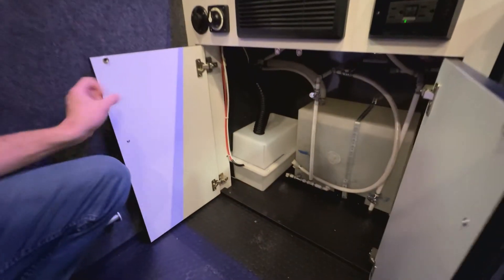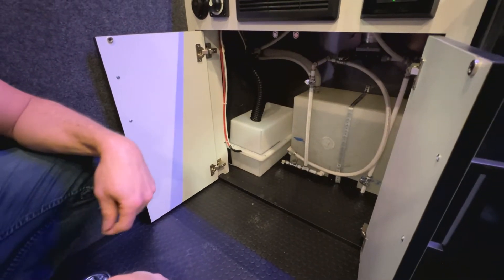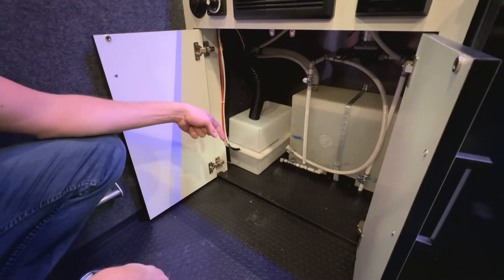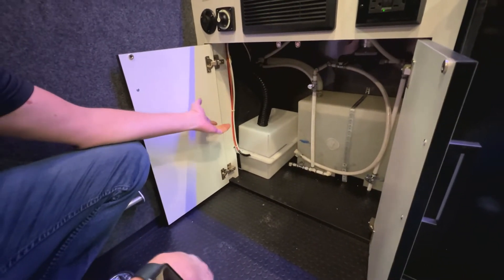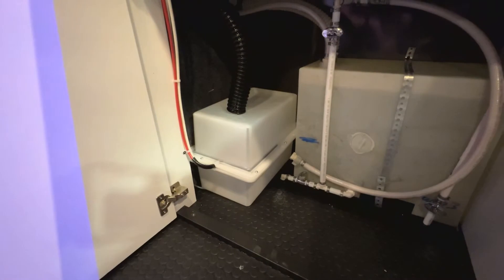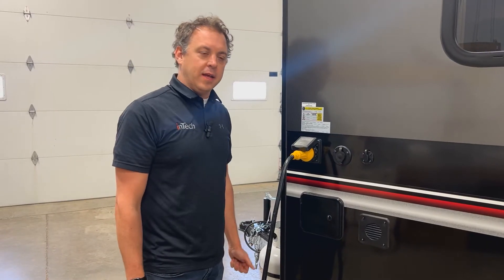Down below here in the cabinet, you've got your battery box. This is for your 12-volt battery that's going to be installed by your dealer, usually a deep cycle battery. If you want, this unit's also compatible to have a lithium battery installed as well.